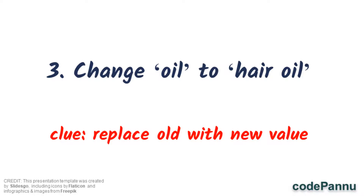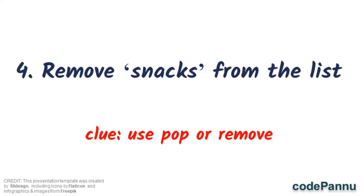Next, she is telling you to change 'oil' to 'hair oil' so that we don't buy the wrong item. What if we buy cooking oil? We cannot use cooking oil for hair, correct! So your third task is to replace 'oil' with 'hair oil'. You know how to do a replace or update, so can you do that?